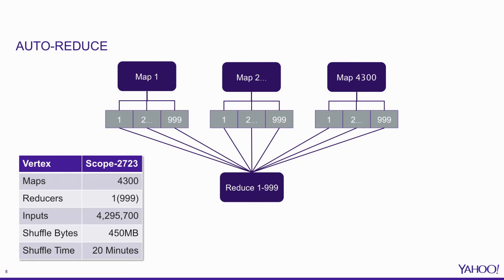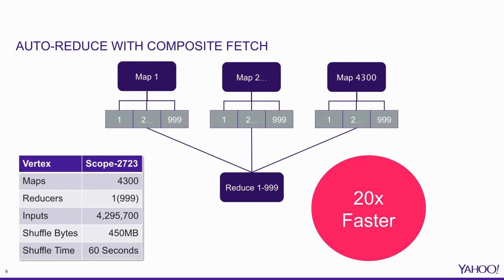That's exactly the innovation we came up with. What if we could do a ranged fetch? Fetch not just piece one, but piece two also, all the way up to all 999 pieces in one go. So we introduced a new shuffle handler — the Tez Shuffle Handler — with an advanced feature set. The innovation is simply: don't just fetch one piece at a time, but fetch a range of pieces. In our new graph, the connections between that one reducer and its upstream map tasks are just one per map — 4,300 connections done very quickly. No longer 20 minutes, but 60 seconds: a 20 times speedup.